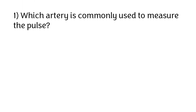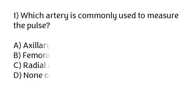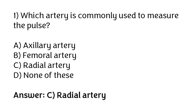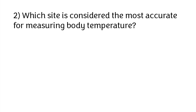Which artery is commonly used to measure the pulse? Options: axillary artery, femoral artery, radial artery, none of these. The correct answer is option C — radial artery is commonly used to measure the pulse.